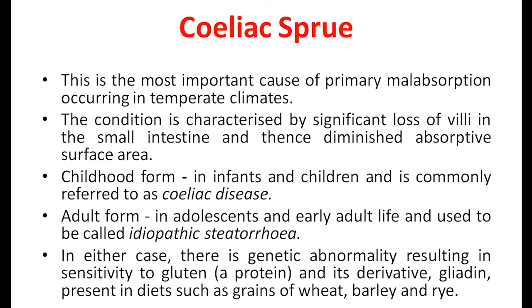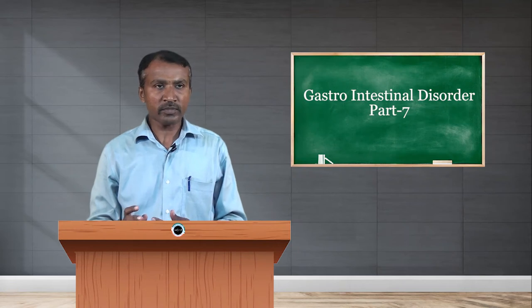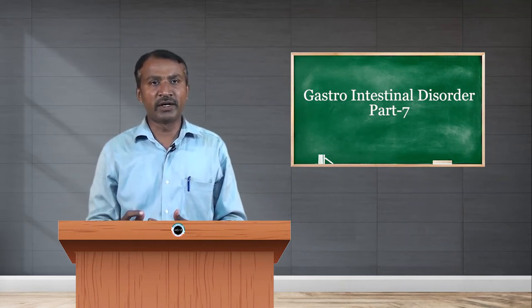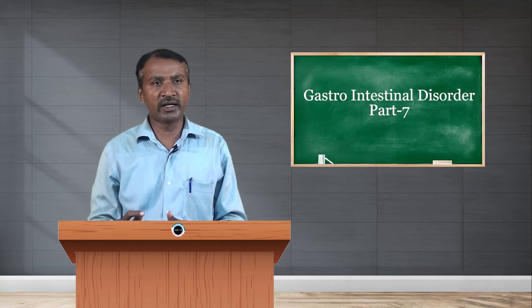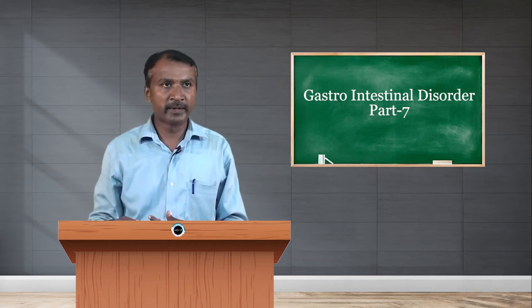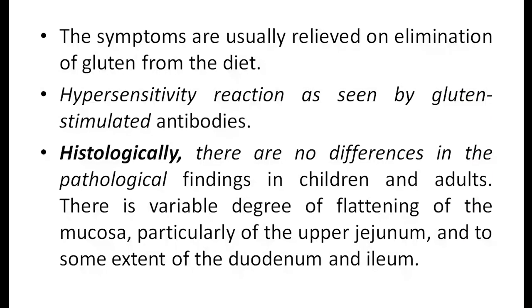In either case, there is a genetic abnormality resulting in sensitivity to gluten gliadin, a protein commonly found in wheat, barley, and rye and their derivatives. Symptoms are usually relieved on elimination of gluten from the diet. A hypersensitivity reaction is seen through gluten-stimulated antibodies. Histologically, there are no differences in pathological findings in children and adults — both show variable flattening of the mucosa, particularly of the upper jejunum and to a small extent the duodenum and ileum.